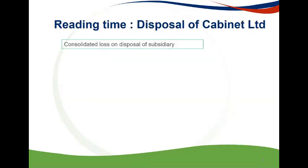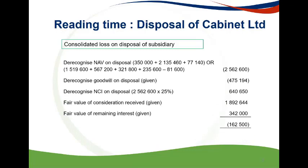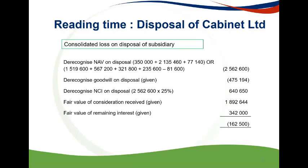Reshuffle Limited lost control of Cabinet Limited on 31 May 2018. You therefore need to calculate the consolidated profit or loss on 31 May 2018. Note that no profit and reserves needed to be apportioned to the date control was lost, as the net asset value figures on 31 May 2018 have been given. Therefore, if the correct process is followed in terms of IFRS 10, paragraph B98, you should arrive at the correct consolidated loss.